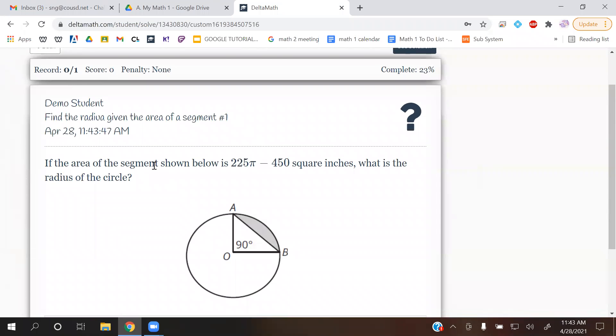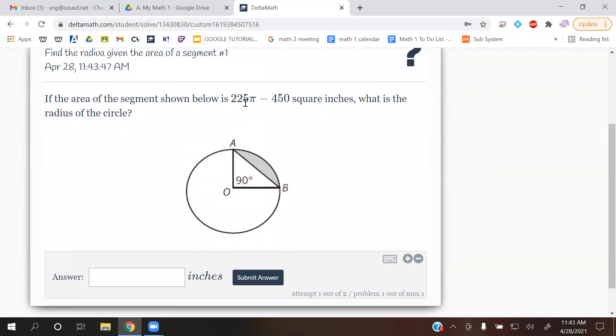If the area of the segment shown below is 225π minus 450 square inches, what is the radius of the circle? Okay, so this picture is exactly the same thing that we had in the last video. So it's the same formula we're going to use.